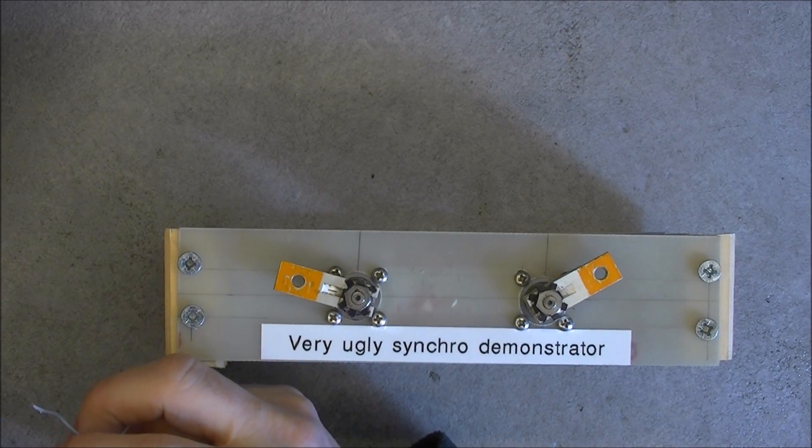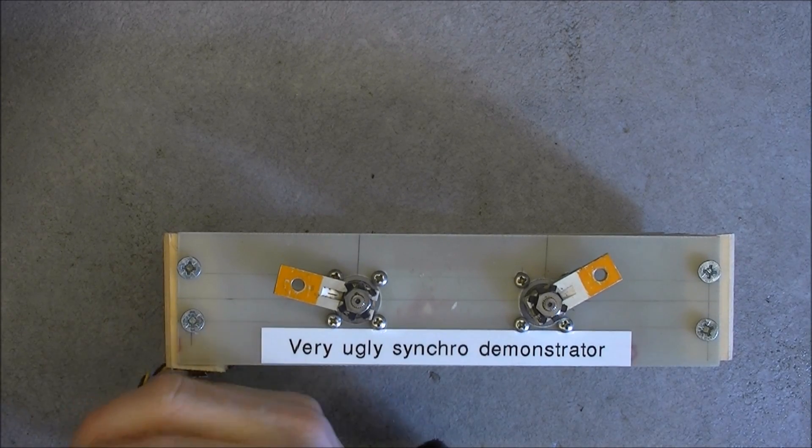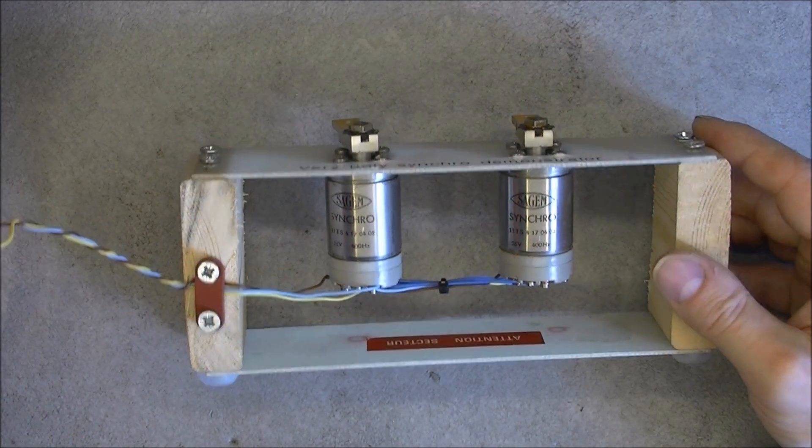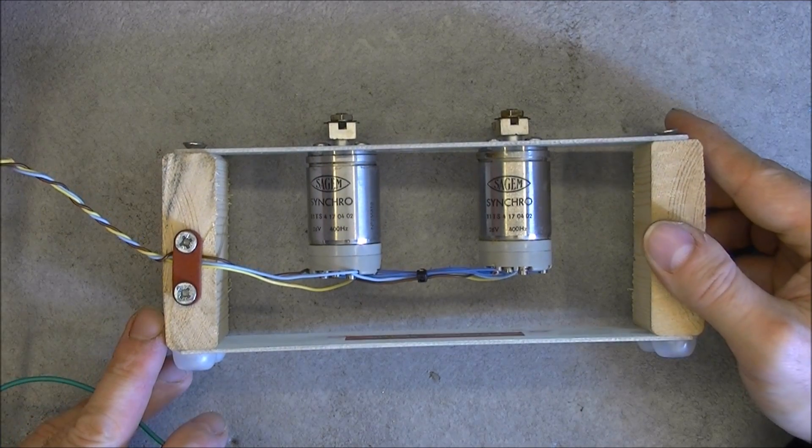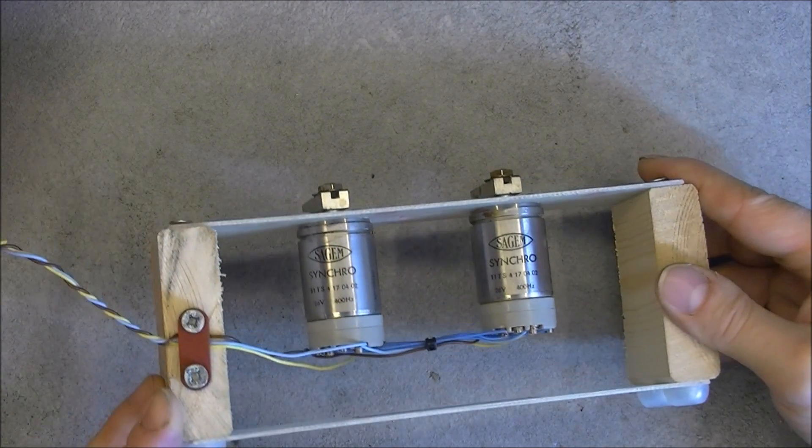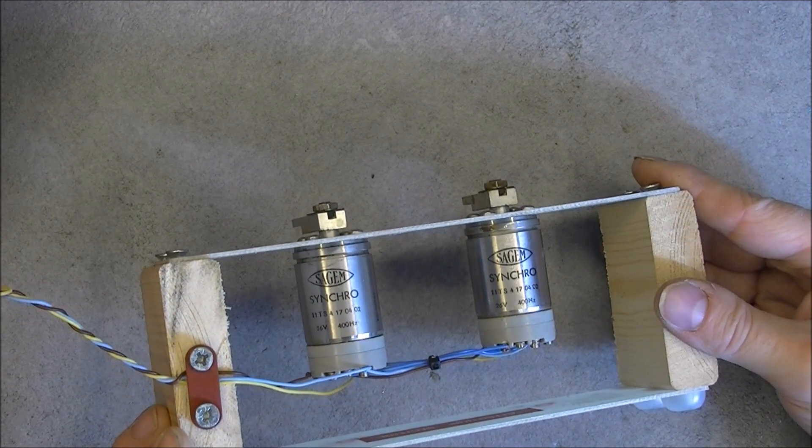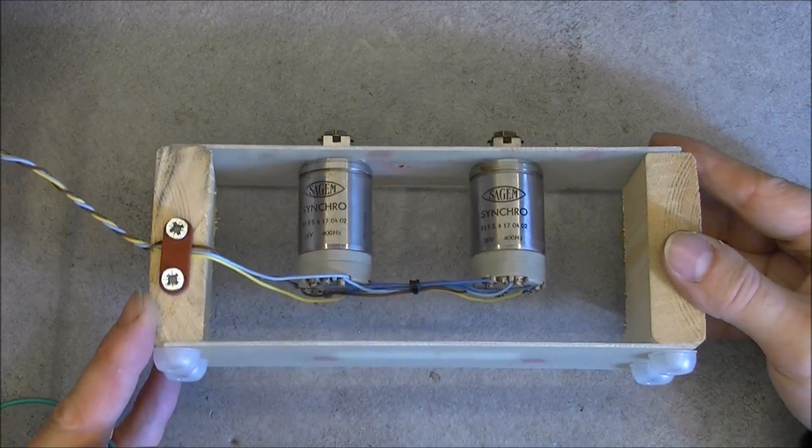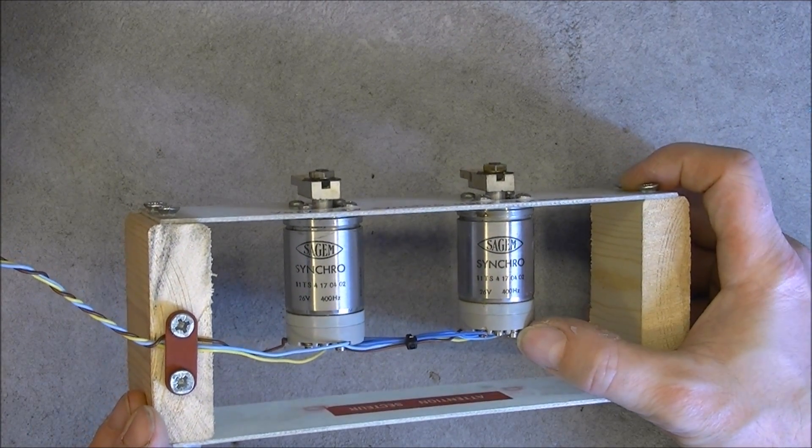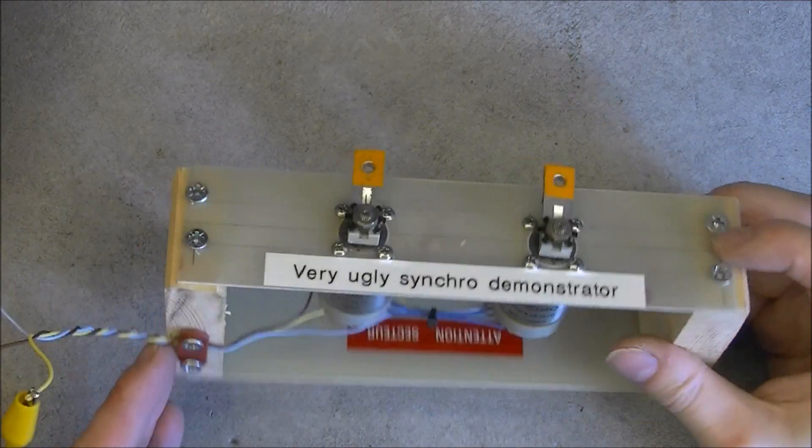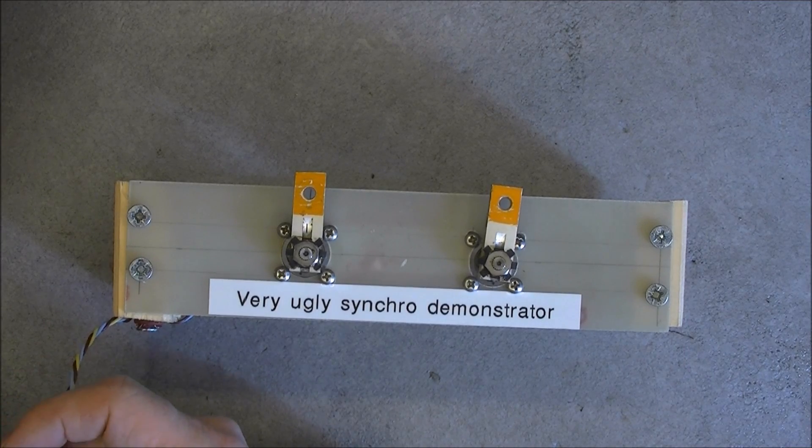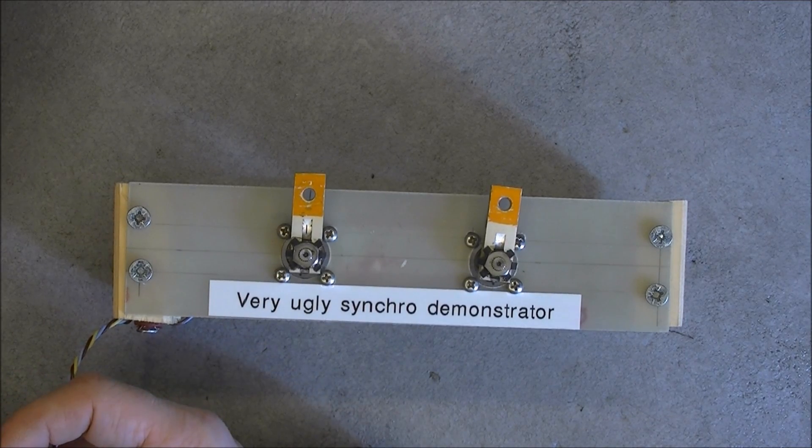So the wiring is very simple. You just have to connect together the pins of the same name on the two synchros. And the power supply goes to the rotor, not the stator. The stators are connected together from one synchro to the other. The rotors are actually also in parallel but receive the power supply. Well, it is the same thing I found on Wikipedia. Maybe there are other ways to use them but...